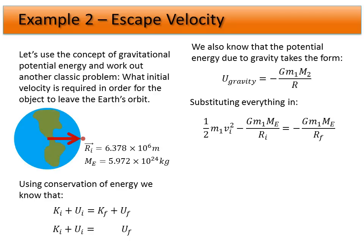And we substitute everything in. So we have one half M1 V initial squared. So what's its initial velocity? This is the value we're looking for. So what velocity do we need to get off this planet? So initial kinetic energy, one half MV squared.